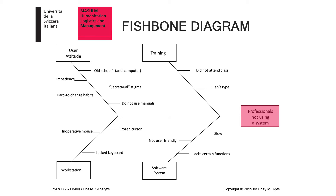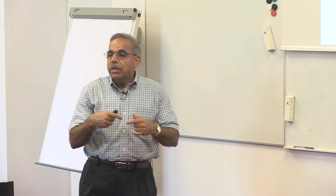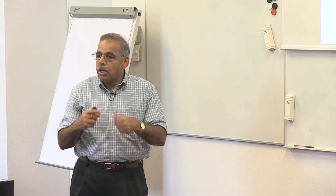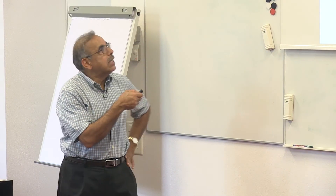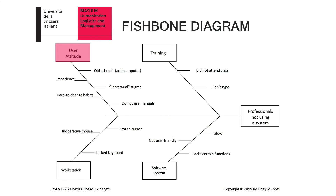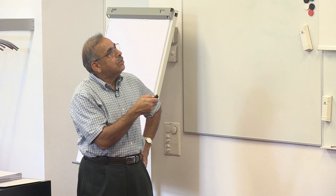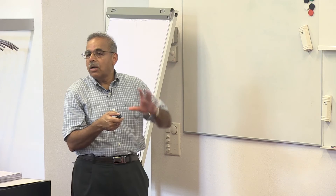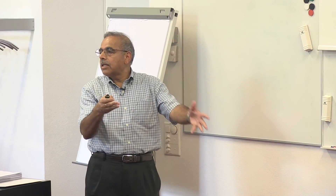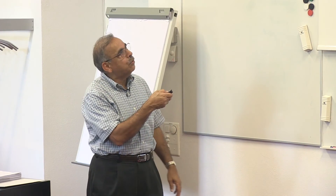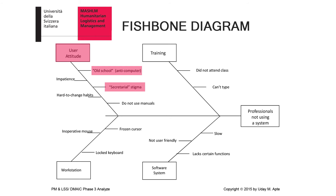The main causes identified were training, user attitude, workstation, and software system. After identifying these, you dig deeper. For user attitude, you ask why — maybe senior managers are old school and not comfortable with new technology, or they think hardware is something only secretaries use, creating a sort of secretarial stigma.